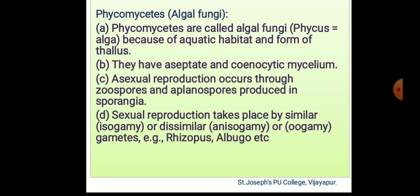Sexual reproduction takes place by similar means (isogamous) or dissimilar means (anisogamous or oogamous) gametes. Examples of this class are Rhizopus, Albugo, Mucor, etc.